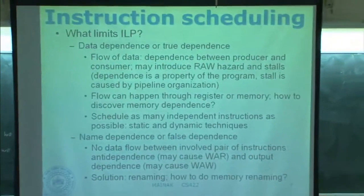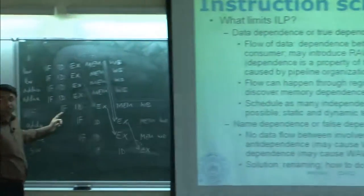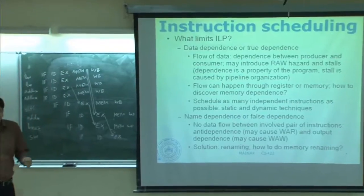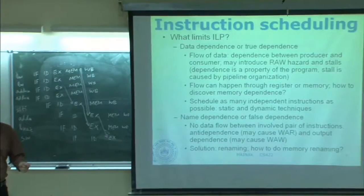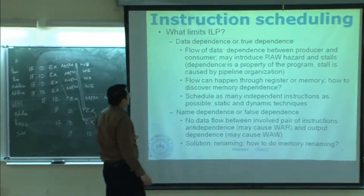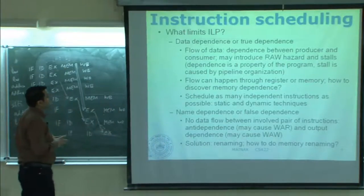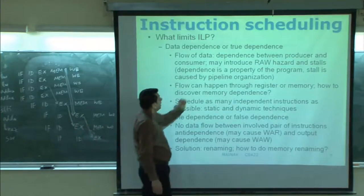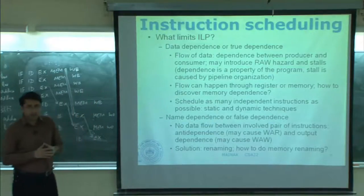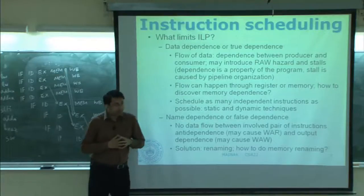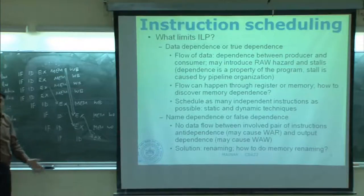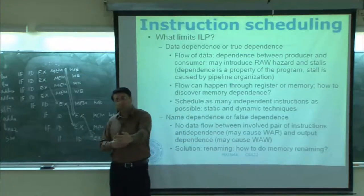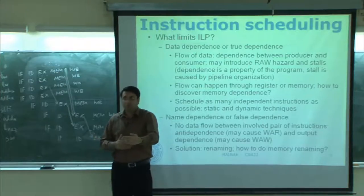To summarize what limits ILP: first is data dependence or true dependence — that was the reason why we could not execute more in a particular cycle. This is often the primary concern because these are dependencies you have to obey for correctness. This concerns flow of data between a producer instruction and a consumer instruction, and it may introduce read-after-write hazards and stalls. Dependence is a property of the program; stalls are caused by pipeline organization. Certain dependencies may not cause any stall simply because the distance between them is large enough.